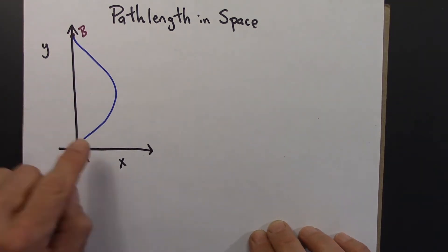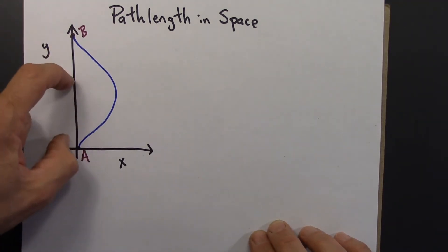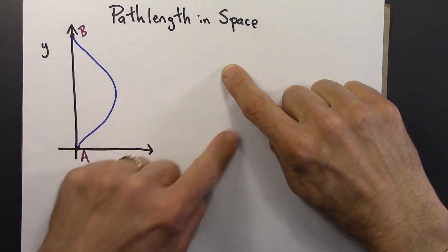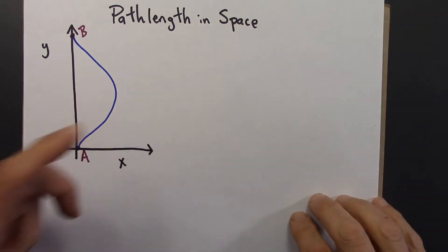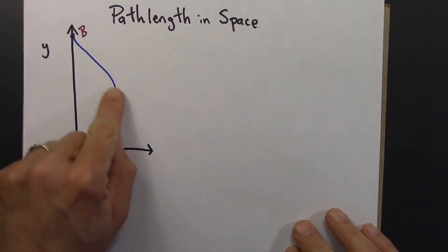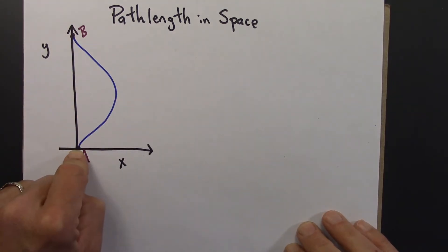And this is where we get stuck. Because I know how to measure lengths if they're straight lines, like the length between my fingers. That would be the hypotenuse of a triangle. I could use the Pythagorean theorem to measure distances. But here, we don't have a straight line.